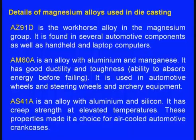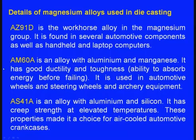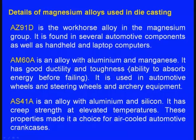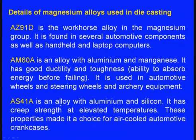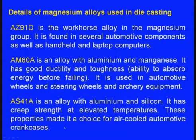Details of magnesium alloys used in die casting: AZ91D is the most widely used alloy among the magnesium group, found in several automotive components as well as handheld and laptop computers. AM60A is an alloy with aluminum and magnesium — it has good ductility and toughness (ability to absorb energy before failing) and is used in automotive wheels, steering wheels, and archery equipment. AS41A alloy with aluminum and silicon has creep strength at elevated temperatures, making it a choice for air-cooled automotive crankcases.